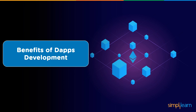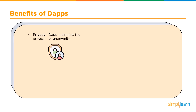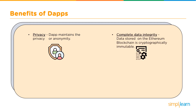Now let's look at the benefits of dApps. First is privacy — dApps maintain the privacy or anonymity of the user, meaning you don't need to provide any personal information to deploy or interact with the dApp. Second is complete data integrity — data stored on the Ethereum blockchain is immutable due to cryptographic primitives, so no one can change, forge, or manipulate transactions or other data stored in the blockchain.